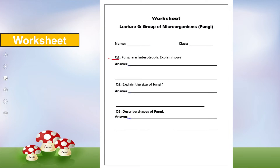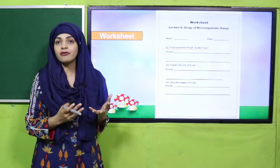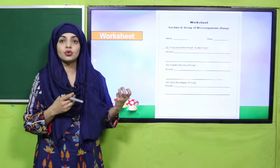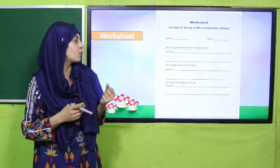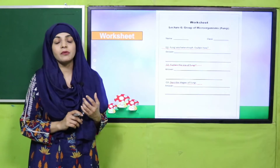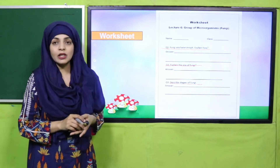Question number one: fungi are heterotrophs — explain how. They cannot make their own food; they have to get it either by living as a parasite or by consuming decomposing matter for energy. Question two: explain the size of fungi. The size of fungi is 5 to 50 mm in length and 2 to 10 mm in diameter. You can also write down their names as given in your book. Complete this worksheet and submit it to your teacher.